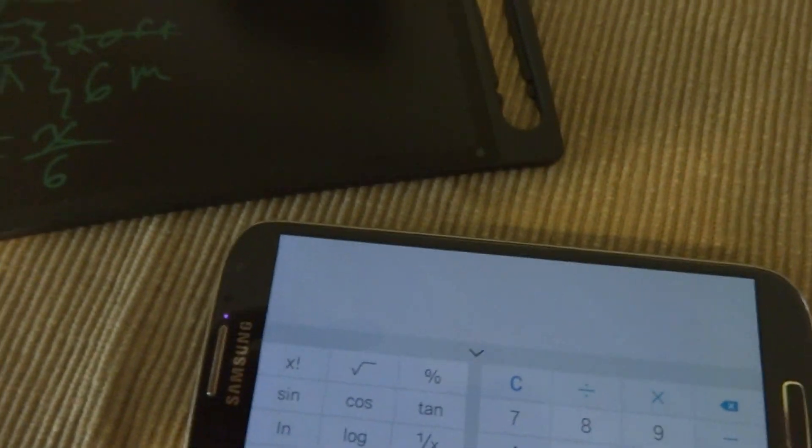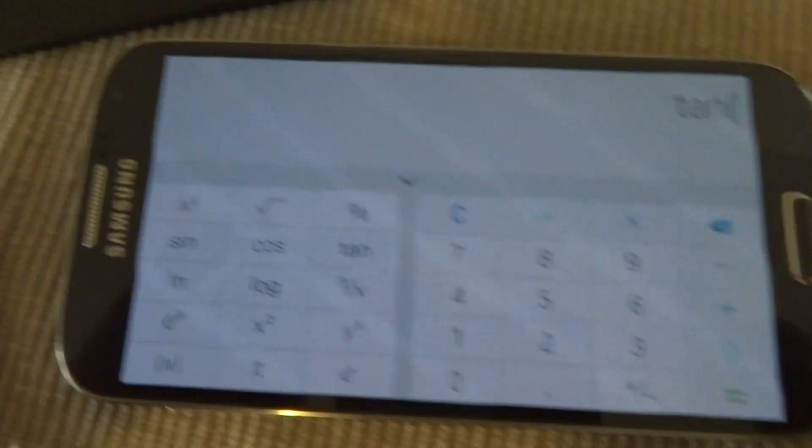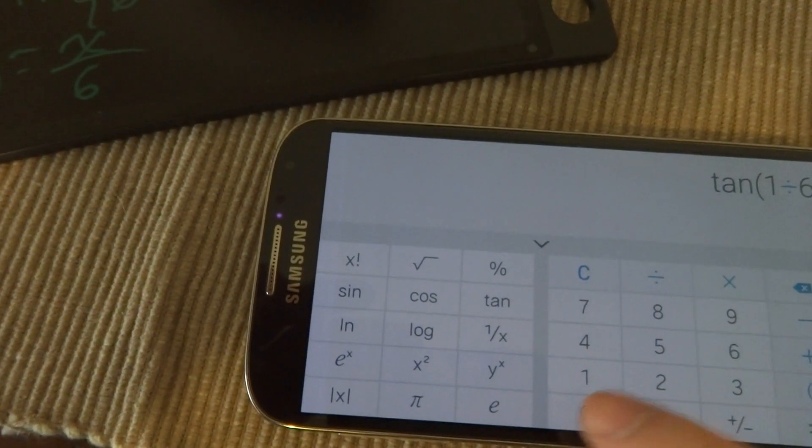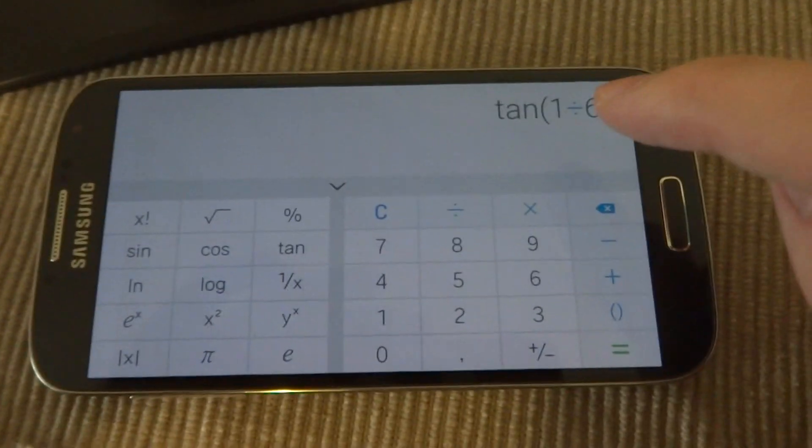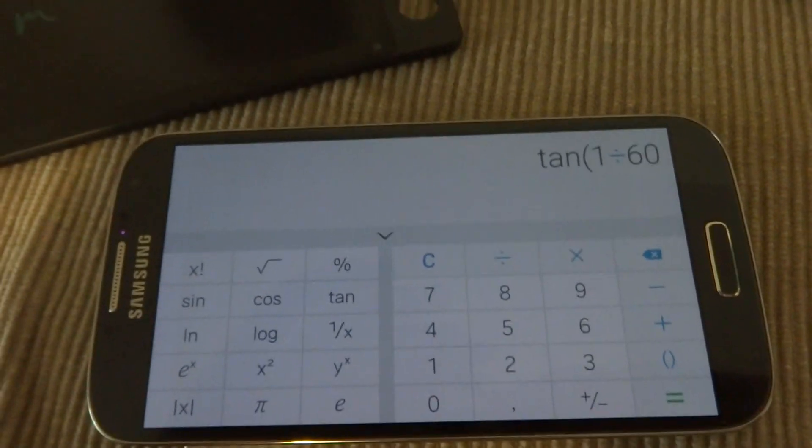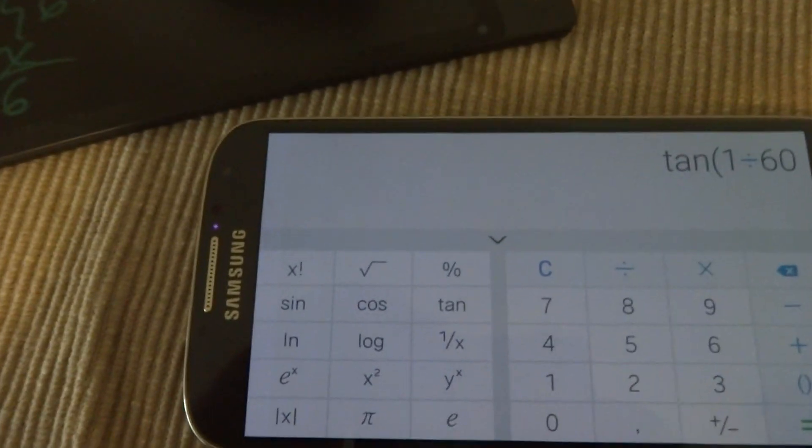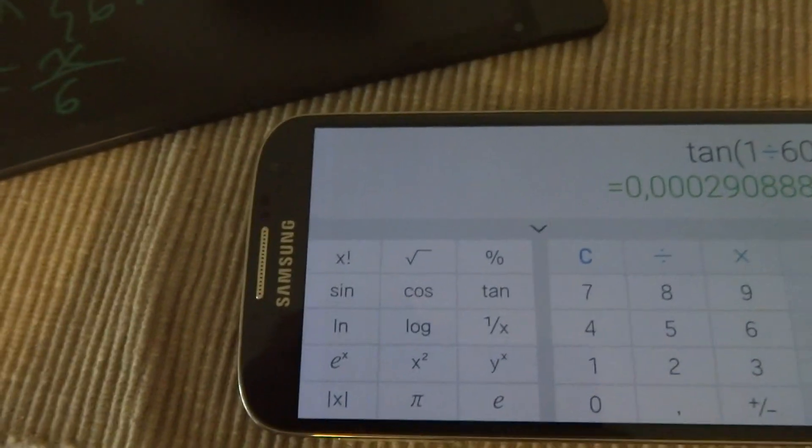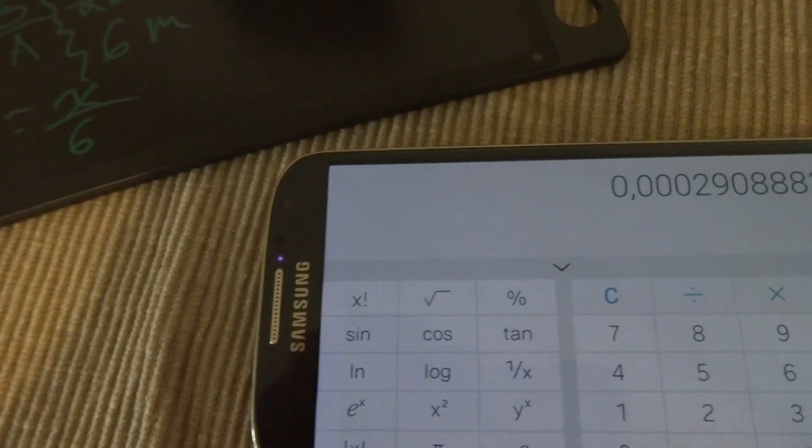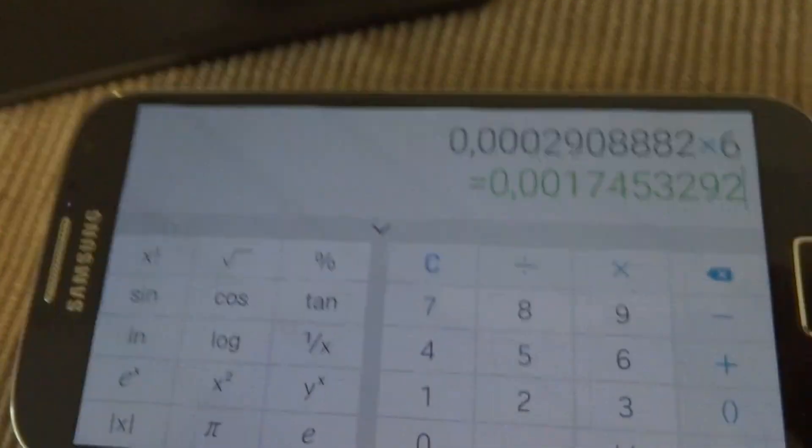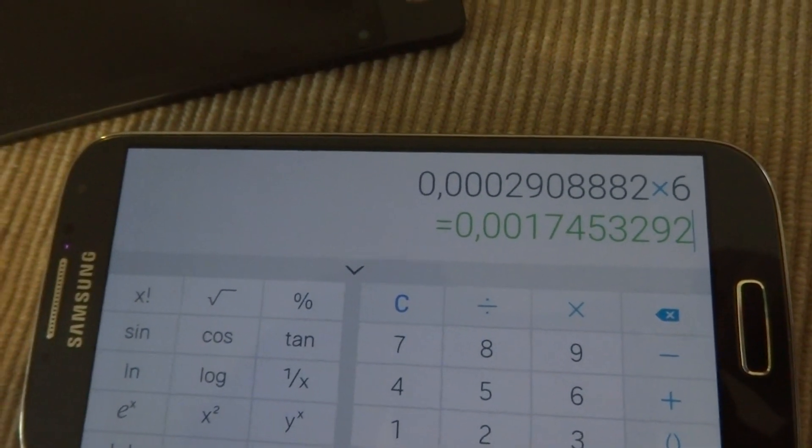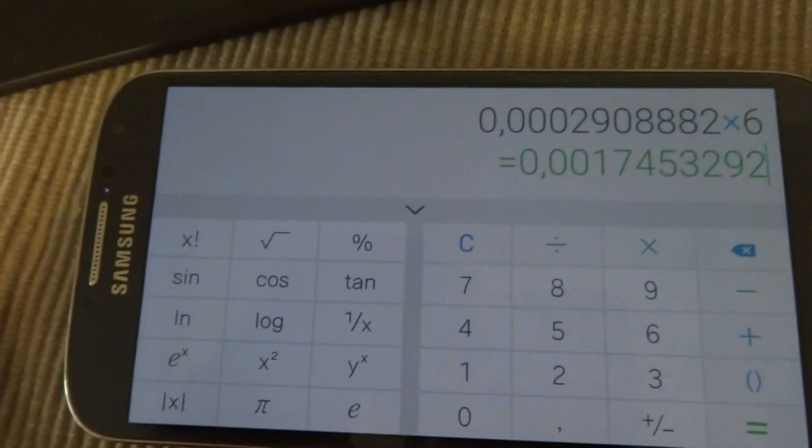And I just screwed that up, so let's do this again. Tangent, 1 divided by 60, so one minute of angle divided by 60 minutes in one angle, equals that, times 6 meters, is equal to that many meters. So if we move that decimal place over one, two, three times, that should give us millimeters, right?